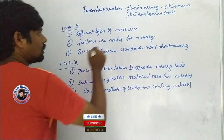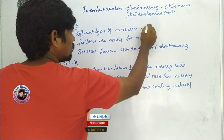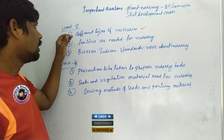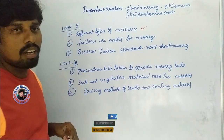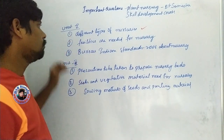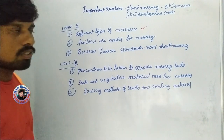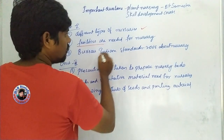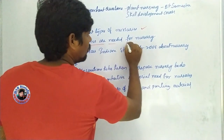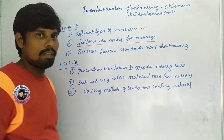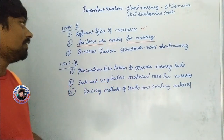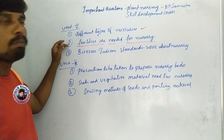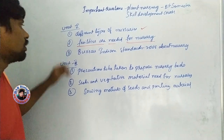I'm going to show you the different types of nurseries. Write about the different types of nurseries — this is the important long answer question. Second important long answer question: what are the facilities that are needed for a nursery? Nursery maintenance and facilities needed — this is the second important question.